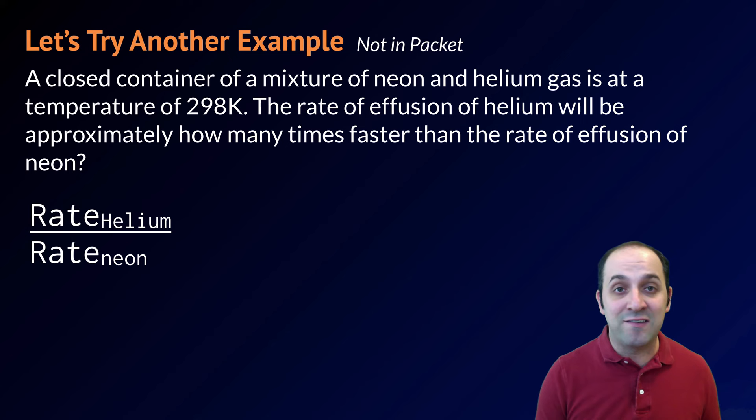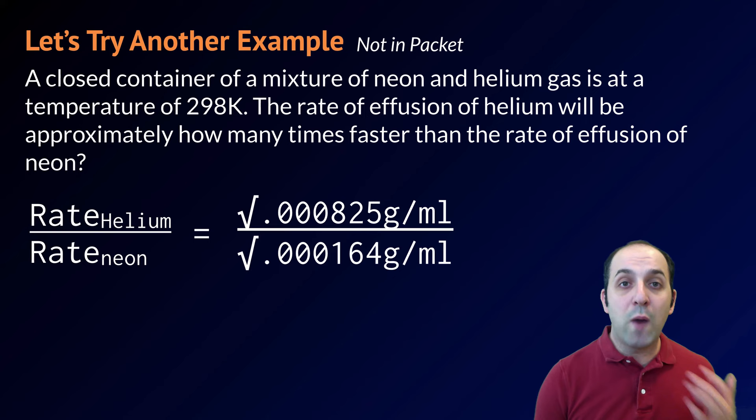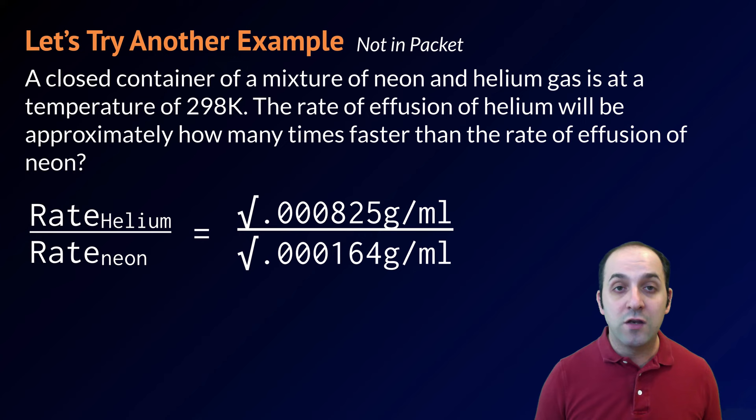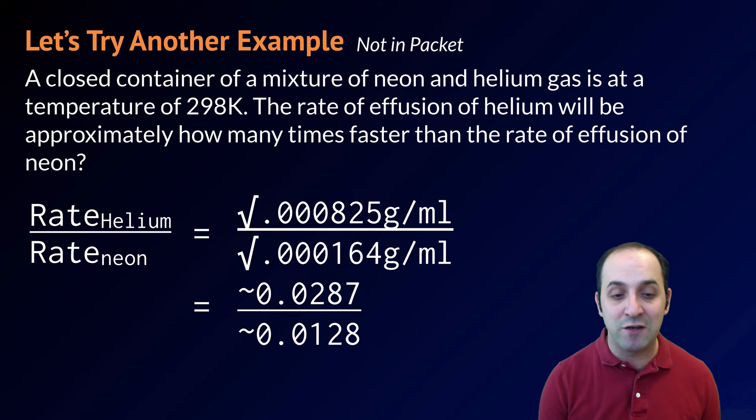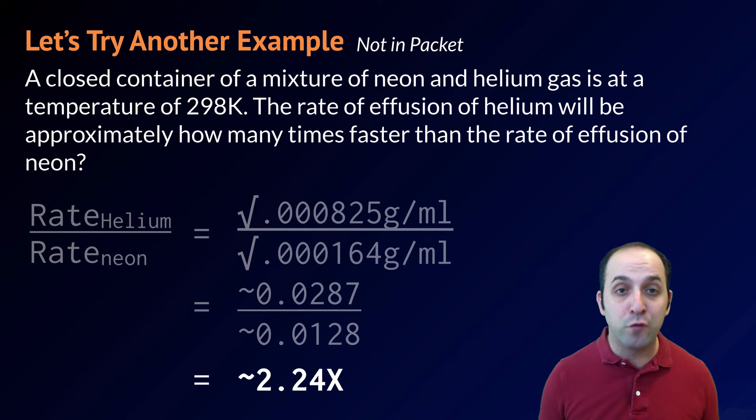I don't have their masses, but I do have their densities, and I can use those values in their place. So the rate of helium divided by the rate of neon equals the square root of the density of neon divided by the square root of the density of helium. Taking those square roots, we get approximately 0.0287 divided by 0.0128. Doing that math, we get a value of 2.24, which tells us that helium will effuse at a rate 2.24 times as fast as neon.